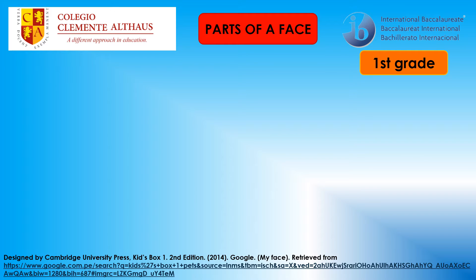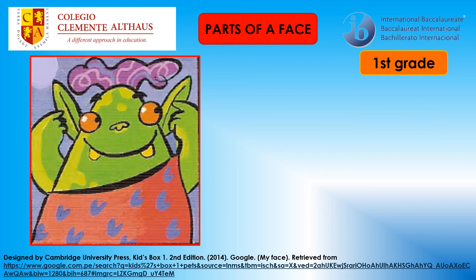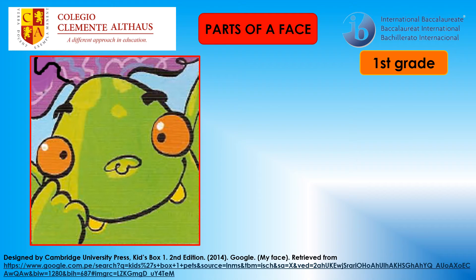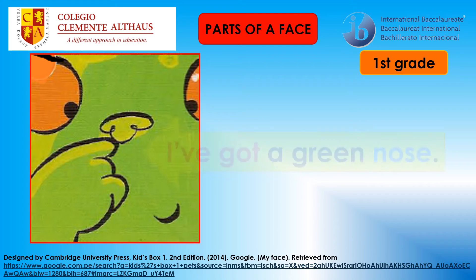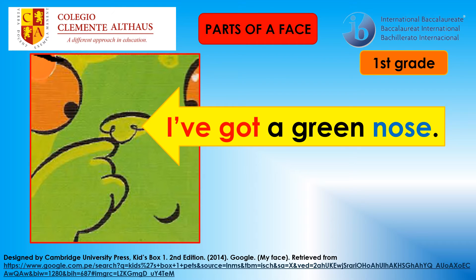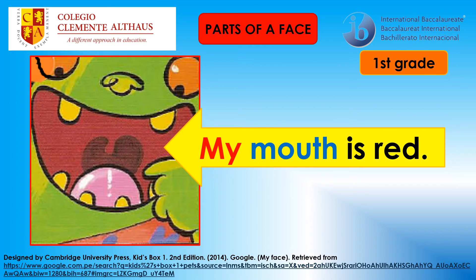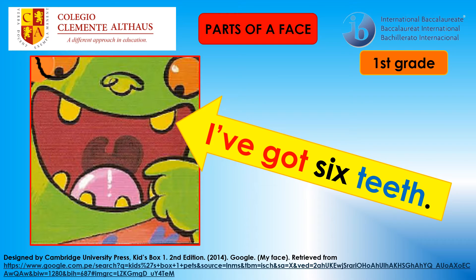Parts of a face: My head is green. I've got two green ears. I've got two orange eyes. I've got a green nose. My mouth is red. I've got six teeth.